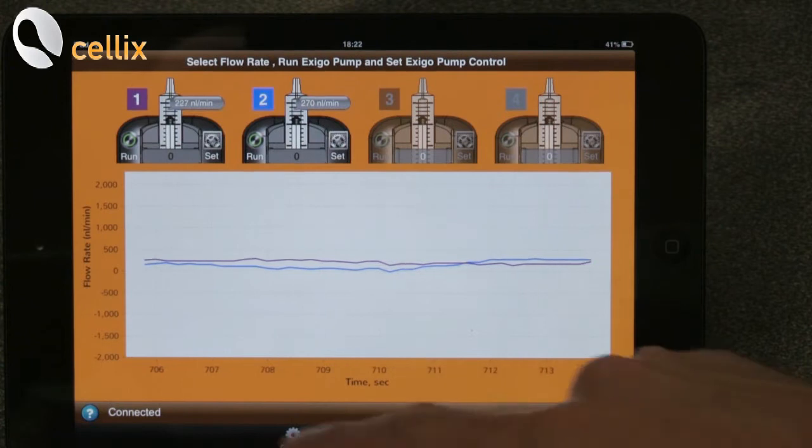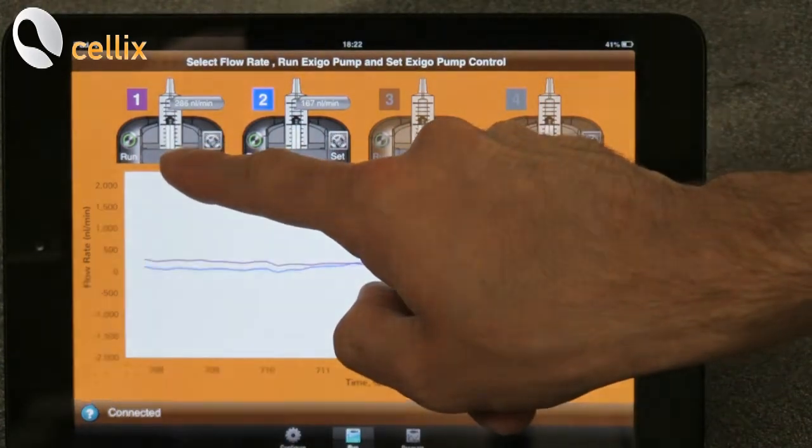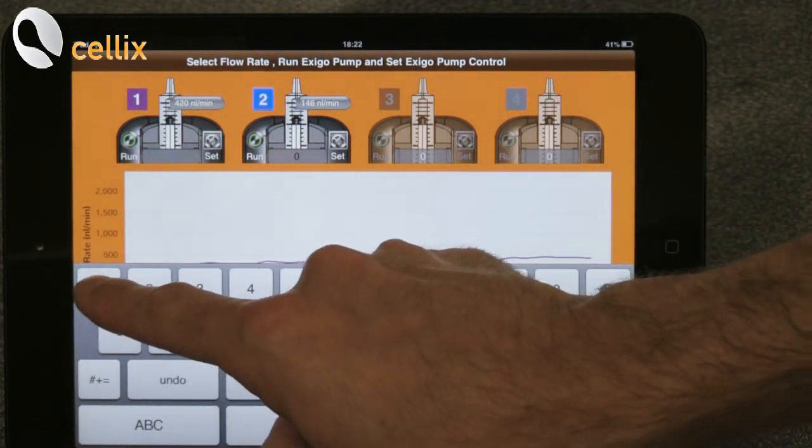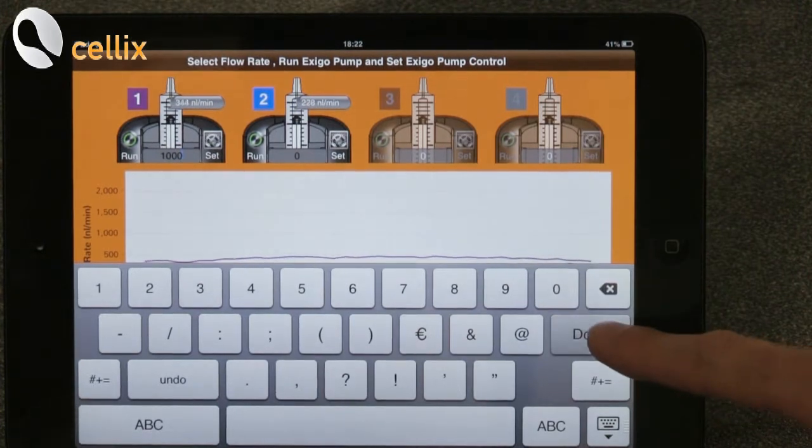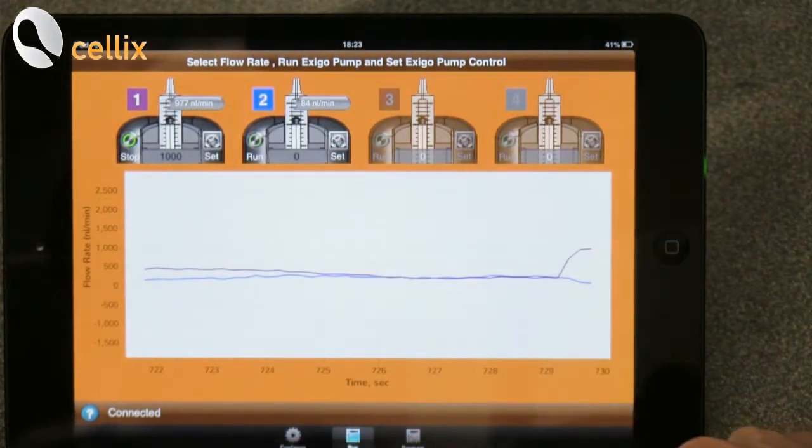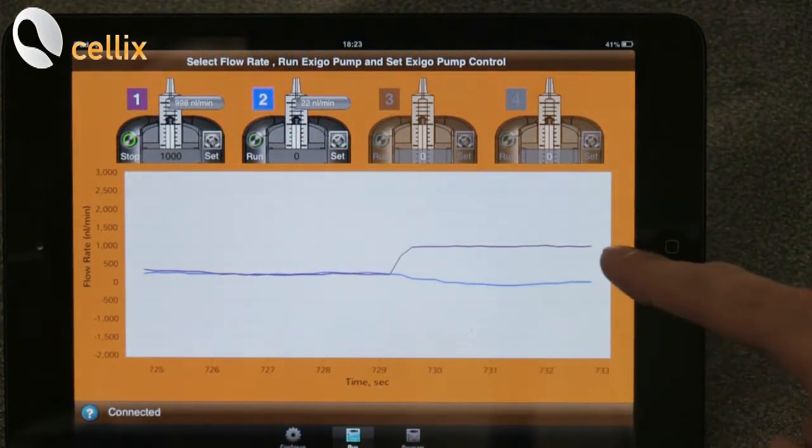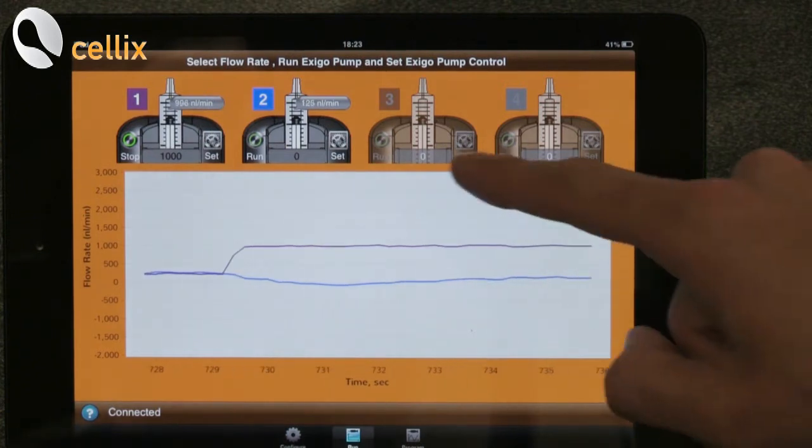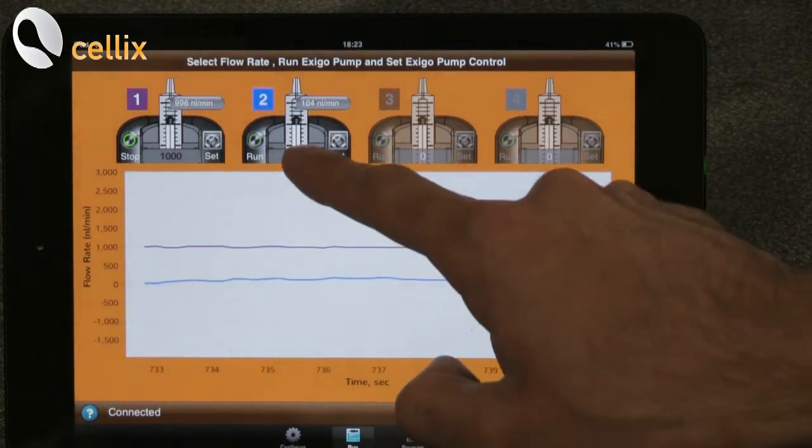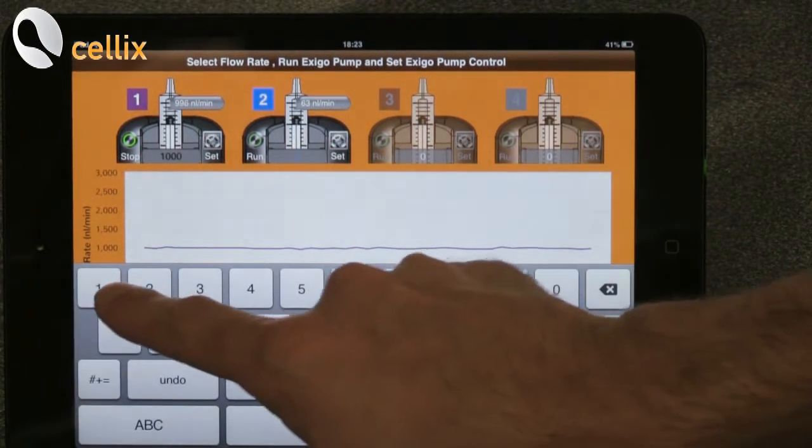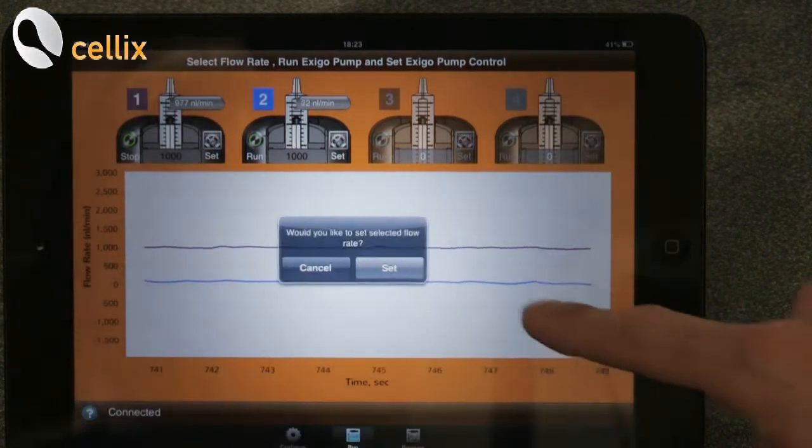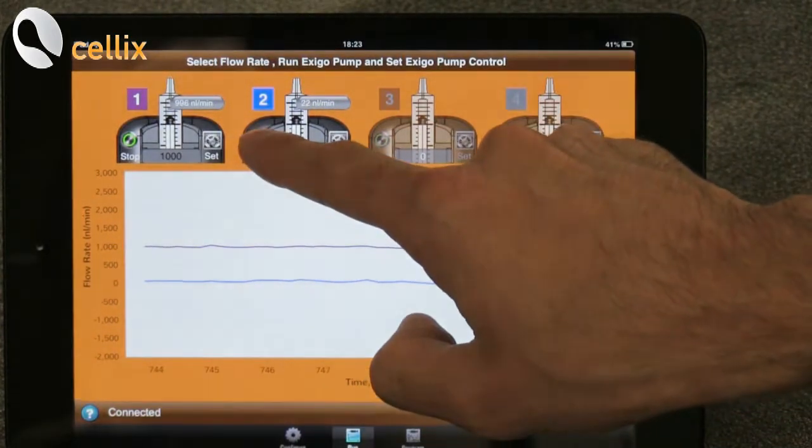We can now set the flow rates. So we can click here in the space for the flow rate. The flow rate is set in nanoliter per minute. So we select 1000. We click done. Set and then run. As we can see this is the actual value for the flow rate. We can do the same operation for the pump number 2. We click. We enter 1000. We click done. Set and run.